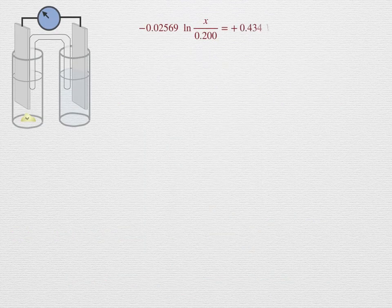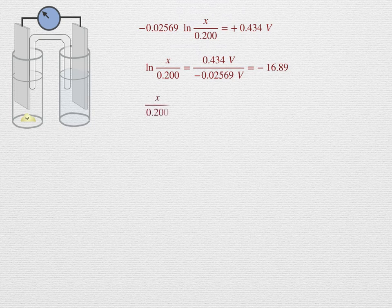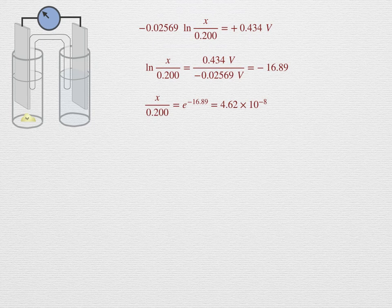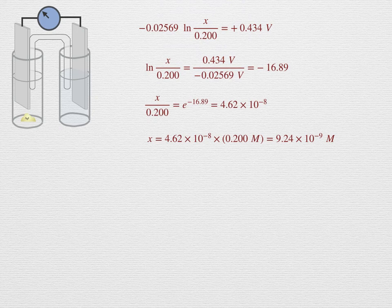Take that expression. Divide through by minus 0.02569 to give minus 16.89. Exponentiate both sides to get rid of the logarithm term. e to the minus 16.89 is 4.62 times 10 to the minus 8. Solving for x gives us 9.24 times 10 to the minus 9 molar as the concentration for the silver ion.